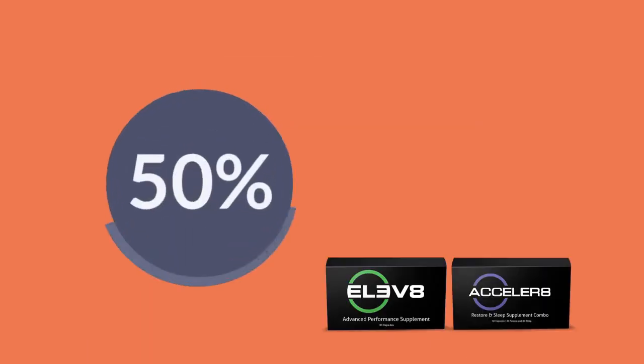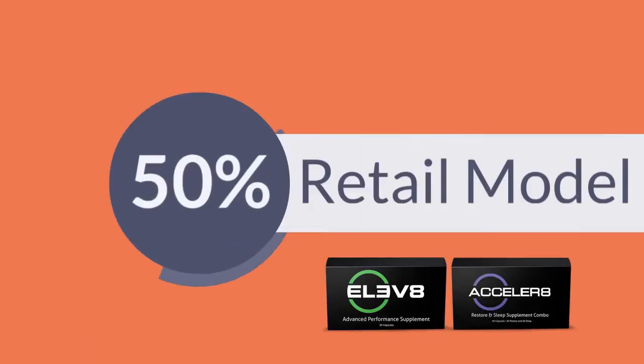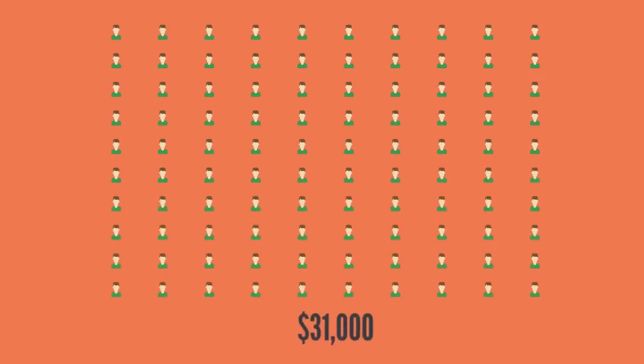The way to do that is first through our 50% retail model. Imagine one customer a week for a year. That's 52 customers. 52 customers reordering every month could potentially lead to an extra $31,000 a year.